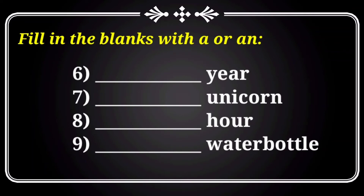Here are a few more examples. Sixth one: blank — yu. The word begins with a consonant sound, so you have to use 'a'. Next, seventh: blank — unicorn. Listen carefully — the word 'u' makes the sound as 'yu'.